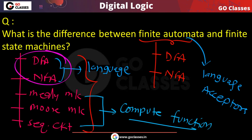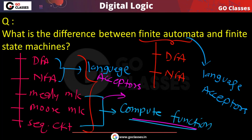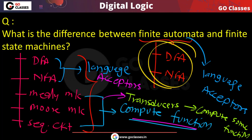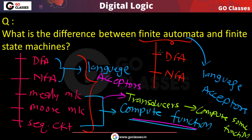To summarize: DFA and NFA are automata - they are language acceptors. Mealy machine, Moore machine, and sequential circuit are transducers - they compute functions. All of them are finite state machines because all have finite number of states. In the next lecture we will start Mealy machine and Moore machine.